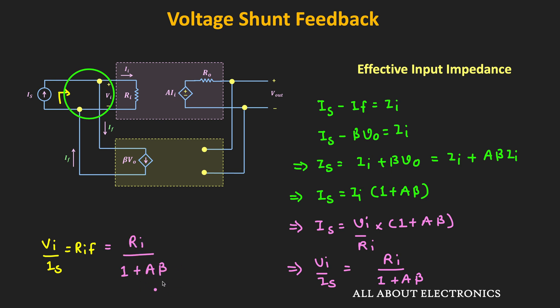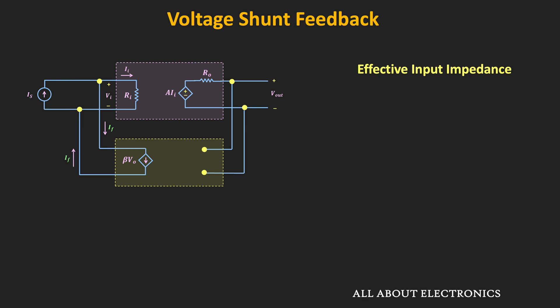So in this way, because of the shunt connection, the effective input impedance of this feedback amplifier reduces. Now let us similarly find the effective output impedance of this feedback amplifier.